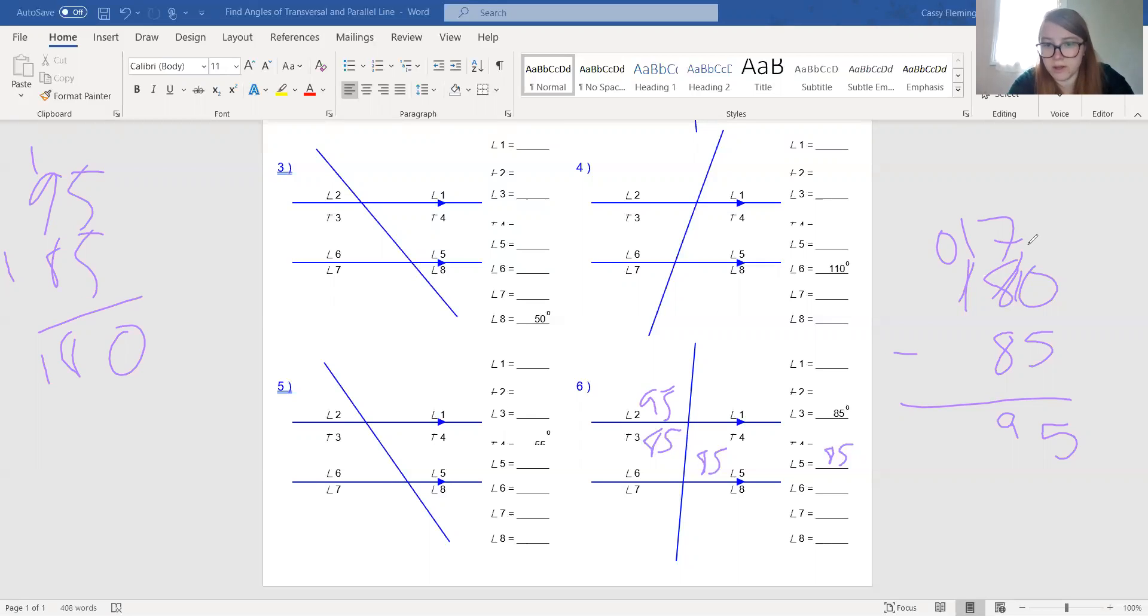So the measure of angle 2 is 95. We know alternate exterior angles would be the measure of angle 8. So 8 is also 95. Now we just need to find out a few more things. So we know the measure of angle 1 needs to add with the measure of angle 2 to be 180. So that would also make the measure of angle 1, 85. And the alternate exterior that would be angle 7. So angle 7 is also 85.